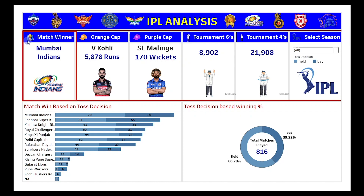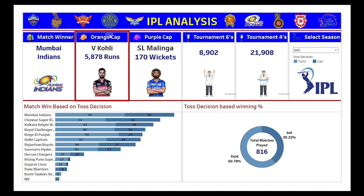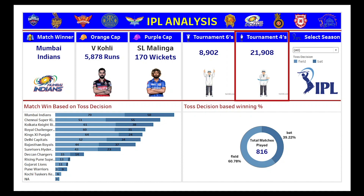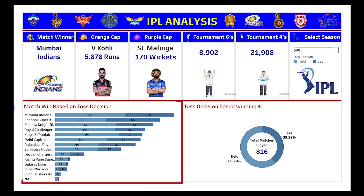The first component on this dashboard is the Match Winner KPI, which represents the winner of that particular season. We also have the Orange Cap holder and the Purple Cap holder for that season, the total number of sixes hit, and the total number of fours hit in that particular season. Next, coming to our charts, this is the stacked bar chart which gives us the match wins based on toss decision.